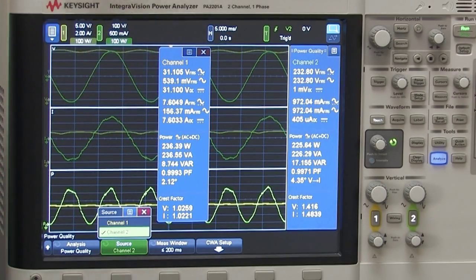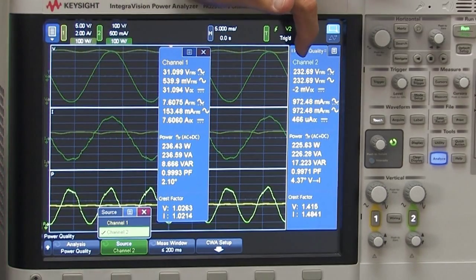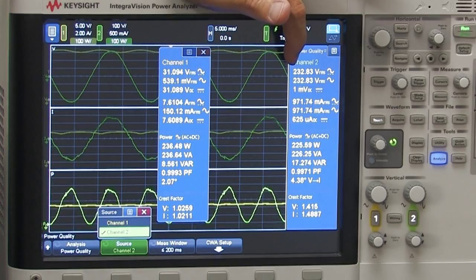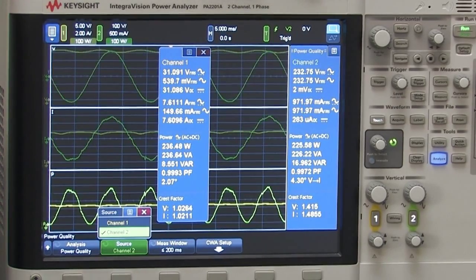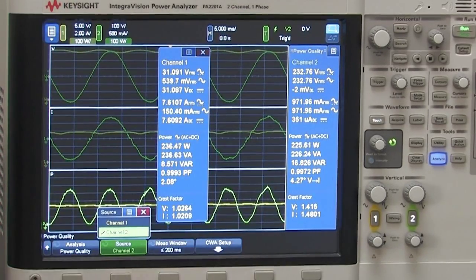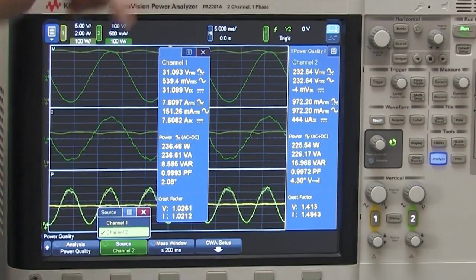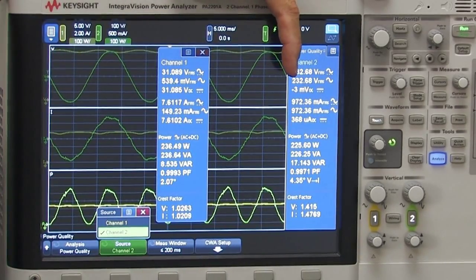Which is the AC output. And as you can see, we've got about 232 volts, 233 volts, a little less than one amp flowing, and the power on the output is about 225 watts.